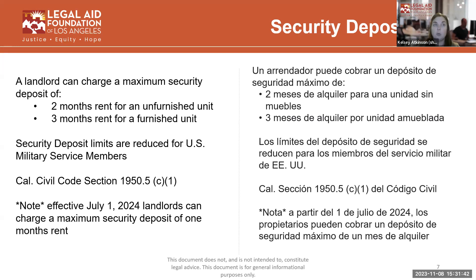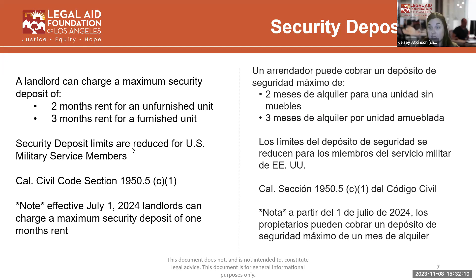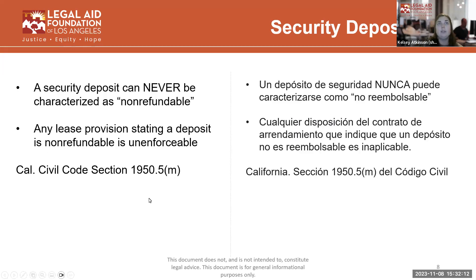One note to be aware of: effective July 1st, 2024, landlords can charge a maximum security deposit of one month's rent. This is a new change in the law that is not going to be retroactive, so it will only be effective for folks starting tenancies from July 1st, 2024 onwards. Landlords will only be allowed to charge a maximum security deposit of one month's rent.